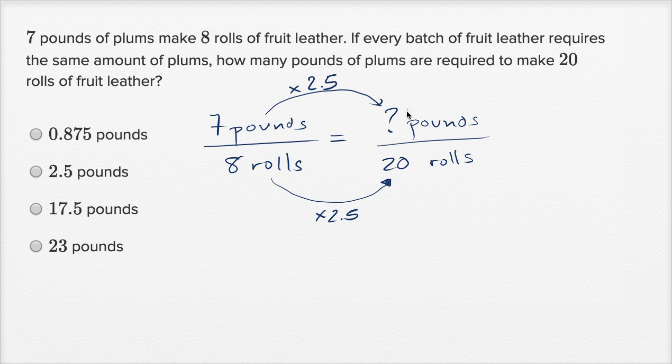And what's seven times 2.5? Seven times two is 14, seven times five is 3.5, 14 plus 3.5, this is going to be 17.5 pounds. And that's this choice right over here.